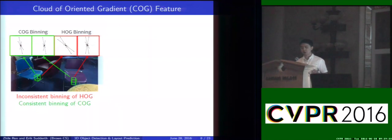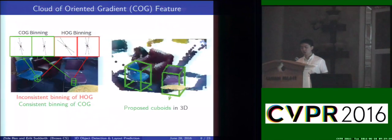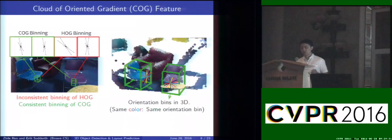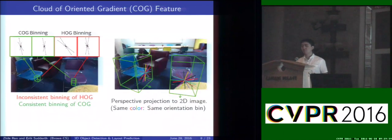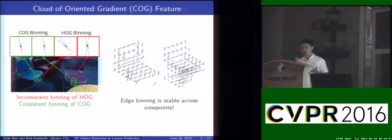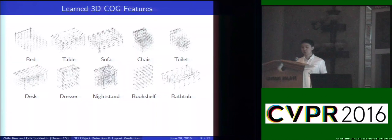Our goal is to model this as a consistent feature, which we call cloud-oriented gradients. Given two proposed cuboids in 3D, we first construct the orientation bins in 3D with respect to the orientation and location of the cuboids. Then we perform perspective projection and project it into the 2D image. Notice in this visualization that the same color represents the same orientation bin, so the edge binning will be stable across different viewpoints. Here we show a sneak peek of our learned 3D COG features, and you can see the general structures and contours of different objects of the indoor scene.